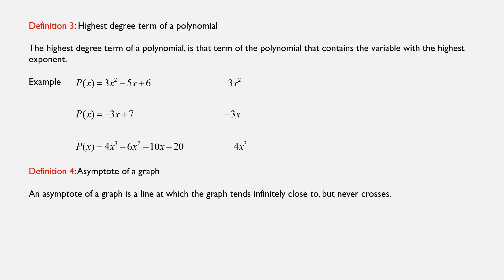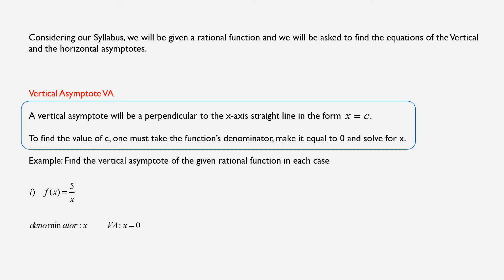Now let's talk about the fourth definition, which is basically our topic: asymptote of a graph. By asymptote of a graph, we mean a line at which the graph tends infinitely close to, but never crosses. Considering our syllabus, we will be given a rational function and asked to find the equations of the vertical and horizontal asymptotes. We will start with the vertical asymptote. A vertical asymptote will always be a perpendicular to the x-axis straight line written in the form x equals c, where c is a real number. To find the value of c, one must take the function's denominator, make it equal to 0, and simply solve for x.